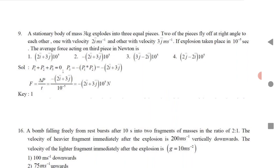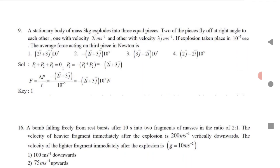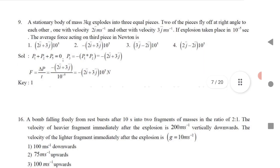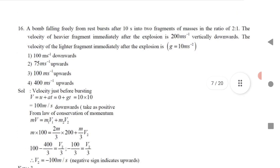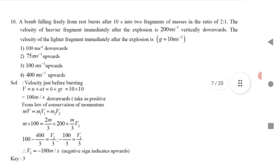Question 11: A stationary body of mass 3 kg explodes into 3 equal pieces. Two pieces fly off at right angles — one with velocity 2î and the other with 3ĵ. The explosion takes place in 10⁻⁵ seconds. To find the average force on the third piece: p₃ = −(p₁ + p₂). Adding p₁ and p₂ gives −(2î + 3ĵ). Divide change in momentum by time to get average force.